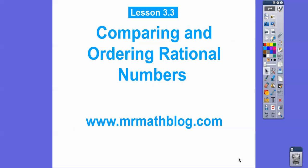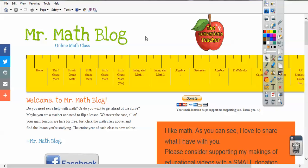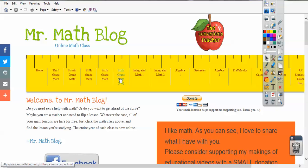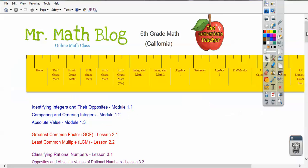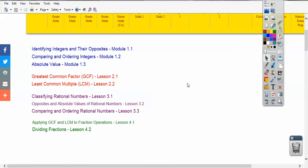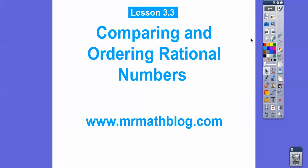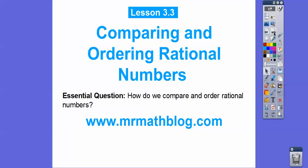Hey everybody, it's Mr. MathBlog here. This lesson is comparing and ordering rational numbers. Don't forget all your lessons can be found at MrMathBlog.com. Here's Mr. MathBlog — I teach at a high school, so there's lots of classes here. We're in 6th grade right here. Make sure you pick the 6th grade one that says CA for California, scroll down and you'll find that lesson right here. When you click that link it'll take you to this video.